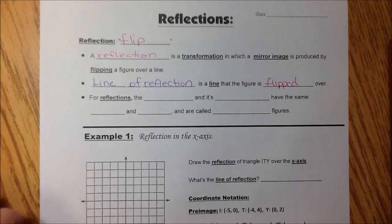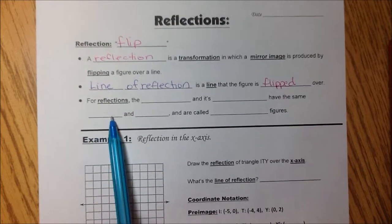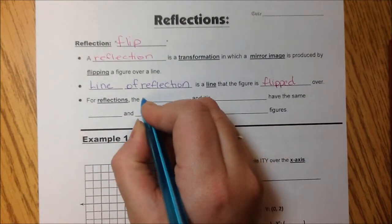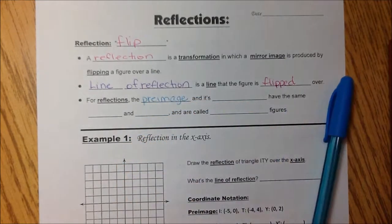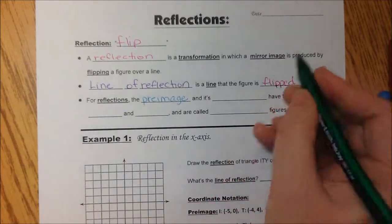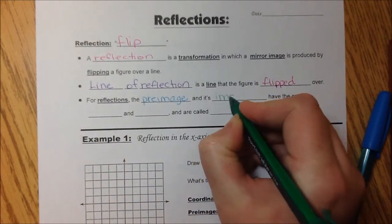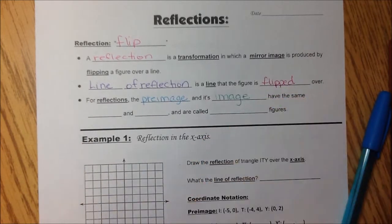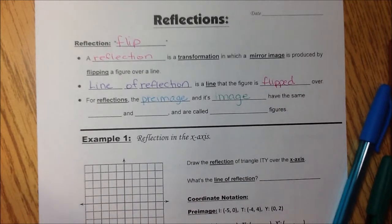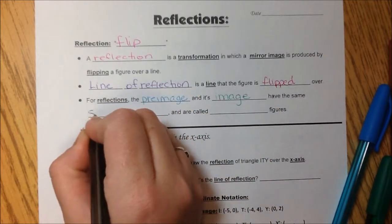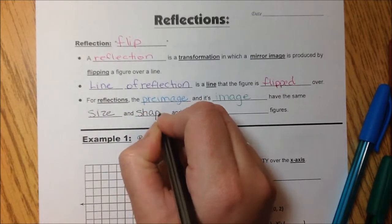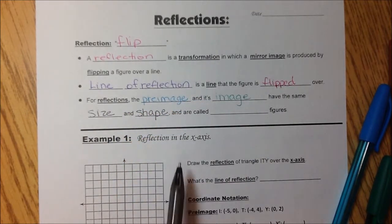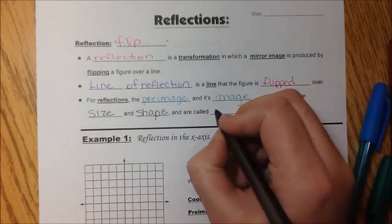Light blue. For reflections, the pre-image, green, and its image have the same black size and shape.